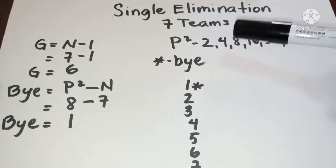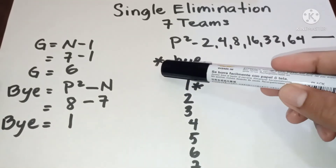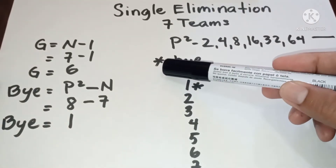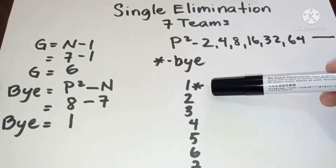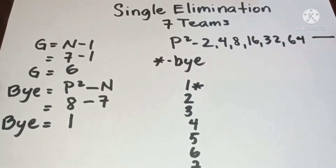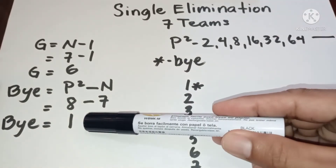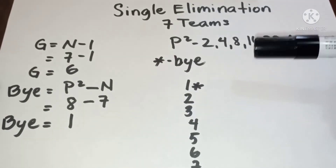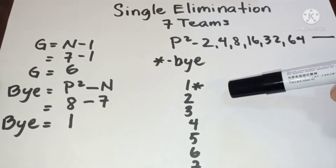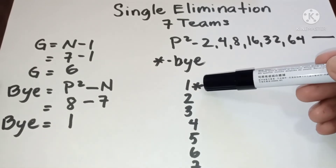Take note that we use the asterisk to identify the bye. Now since we have one bye, the bye should be placed on the top of the upper bracket.